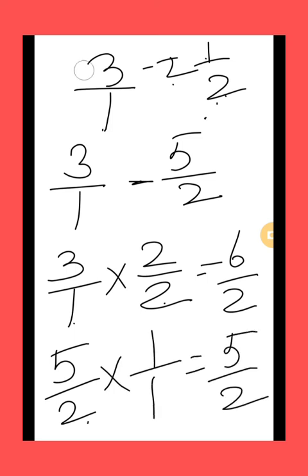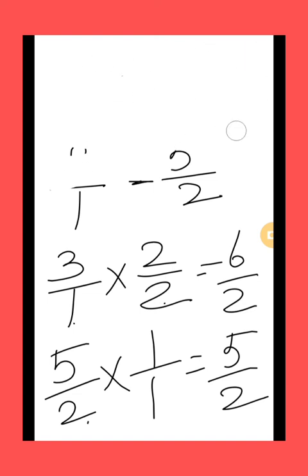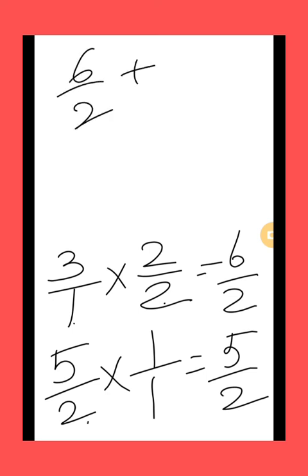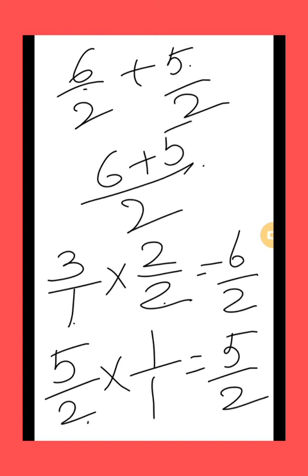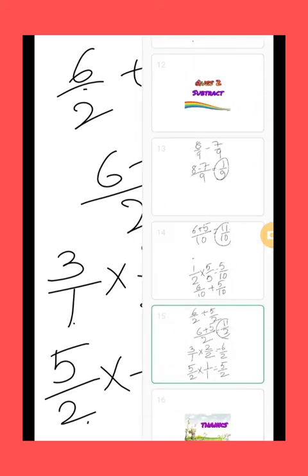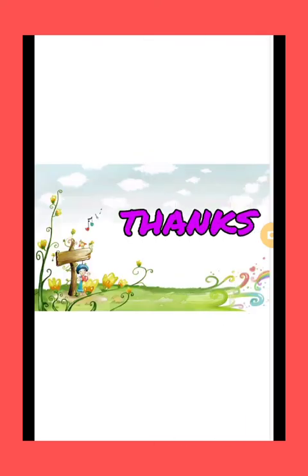Now we will subtract both like fractions: 6 by 2 minus 5 by 2. First of all we subtract the numerators, keeping the denominator same, which is equal to 1 by 2. So in this way you have to complete questions 1 and 2 of exercise 8.9 in your fair notebook. If you have any query you can ask in your Bedstrip room. Thank you and have a nice day.